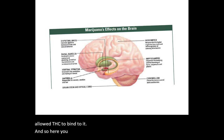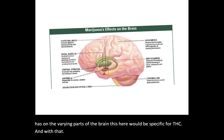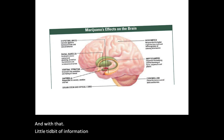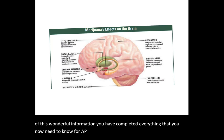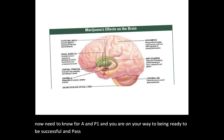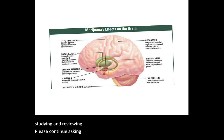This last slide shows the effects that marijuana has on varying parts of the brain, specifically for THC. With that, you have completed everything needed for A&P 1 and are on your way to being ready for your fifth and final lecture exam. Please continue studying, reviewing, and asking questions. I'll see you on the flip side — thank you.